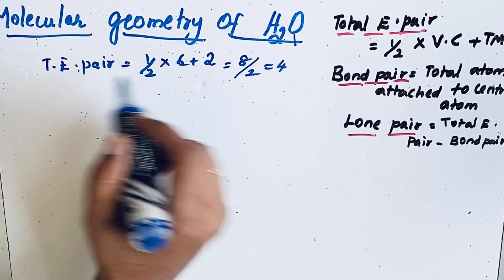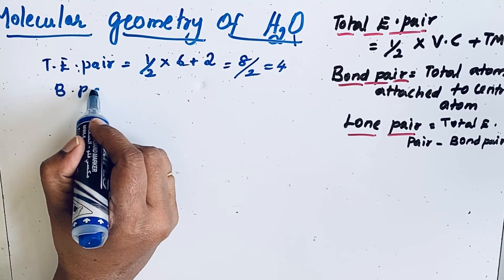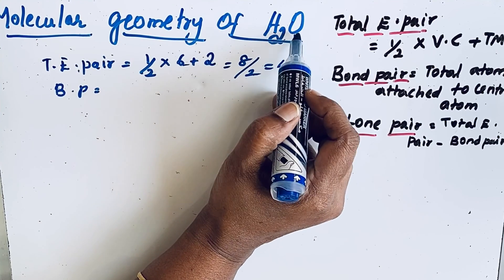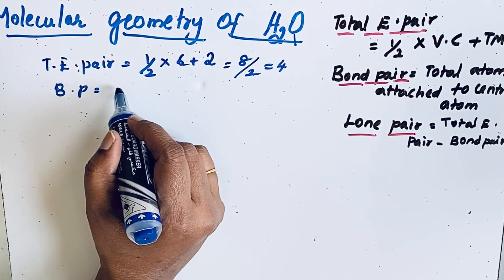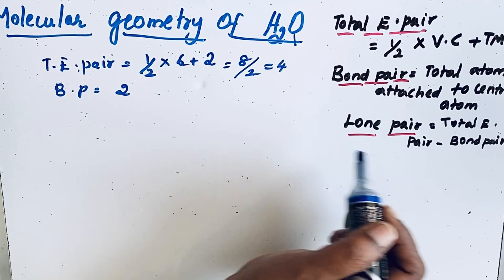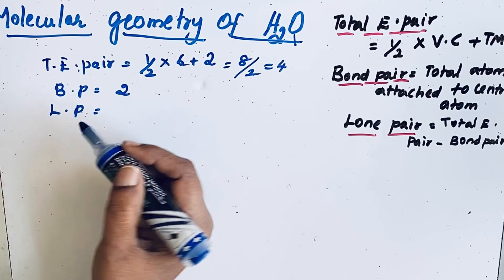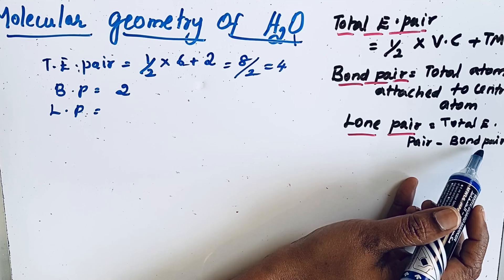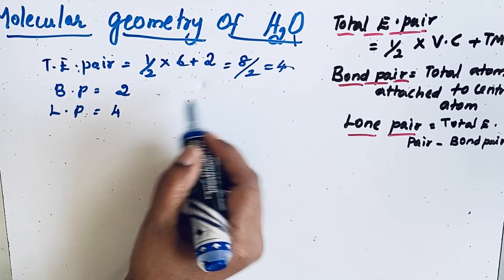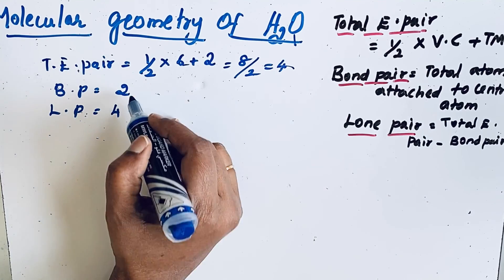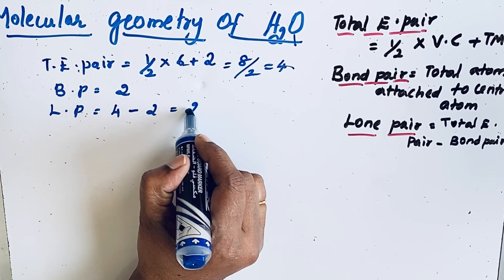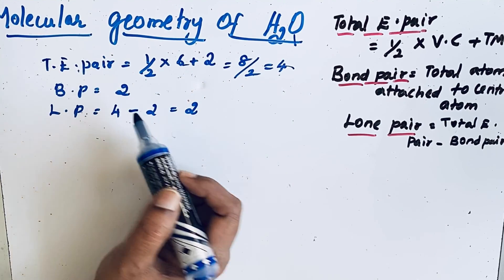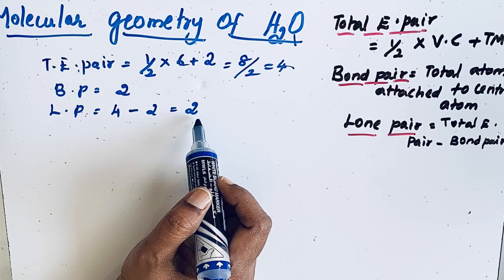Now let us find the bond pair electrons. Bond pair is equal to the total number of atoms attached to the central atom. Oxygen is the central atom, and 2 hydrogen atoms are attached, so bond pair equals 2. Lone pair electrons equal total electron pair minus bond pair: 4 minus 2 equals 2. So in H₂O, total electron pair = 4, bond pair = 2, and lone pair = 2.